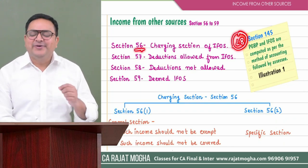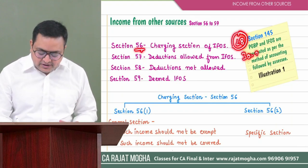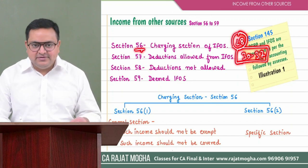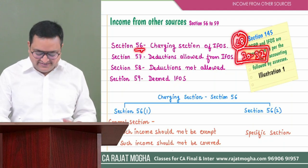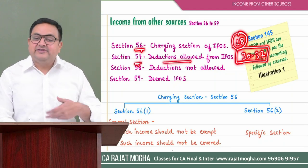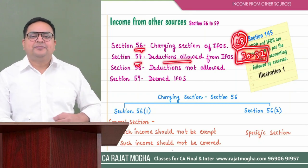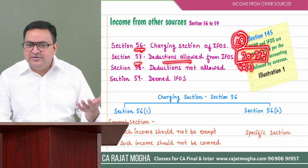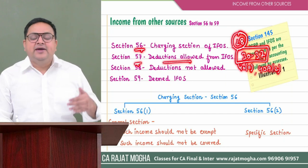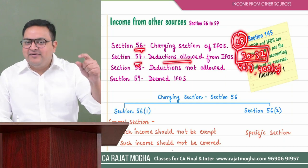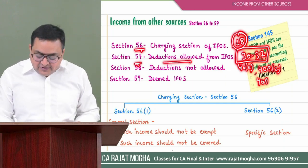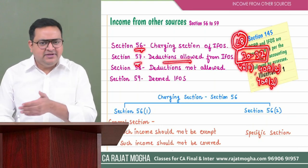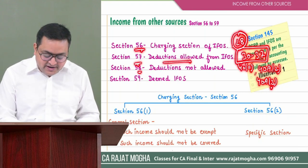In PGBP, Sections 30 to 37 cover expenses allowed. Similarly, we have Section 57 in IFOS for deductions allowed — sounding very similar. In PGBP, Section 40(a) deals with payments outside India or to residents with TDS provisions, and Section 40A(2) covers payments to related parties exceeding fair market value, while Section 40A(3) covers cash payments in excess of ₹10,000. These are expenses not allowed. In IFOS, Section 58 covers deductions not allowed — very much similar to PGBP.